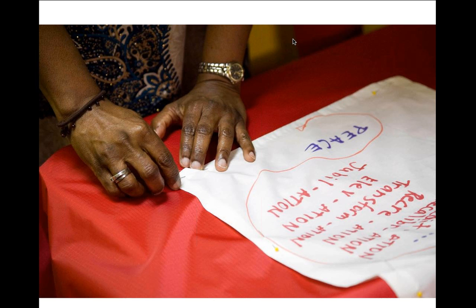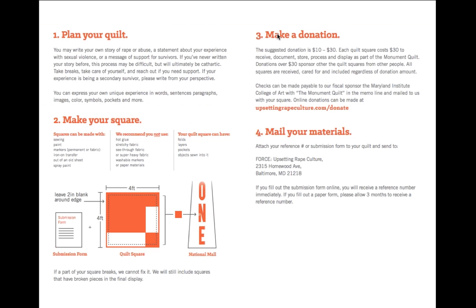People can participate in the quilt in a couple of different ways. This is an image of somebody making their quilt square in the very first quilt-making workshop here in Baltimore at the Spiritual Empowerment Center. People host workshops in their communities — that can mean faith-based communities, survivor support groups, or friend groups. People also make quilt squares individually and mail them in.